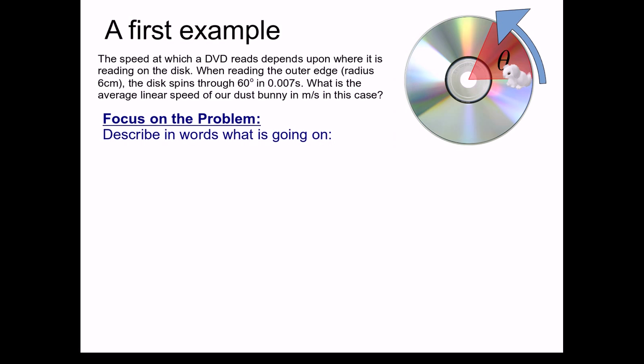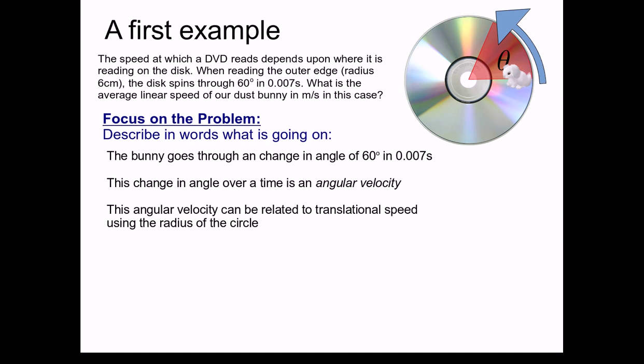Let's begin to focus on the problem by describing in words what's going on. We already have a pretty nice picture of this. Well, we know that the bunny goes through a change in an angle of 60 degrees in 0.007 seconds. This change in angle over time is an angular velocity, as we've just seen. This angular velocity can be related to translational speed using the radius of the circle. And this translational speed is the quantity we're looking for.